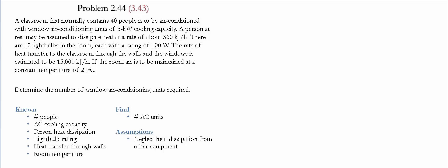Problem 244 or 343 for both textbooks. In this problem, we have a classroom that normally contains 40 people and that is going to be air conditioned by window air conditioning units, which have a 5 kilowatt cooling capacity.